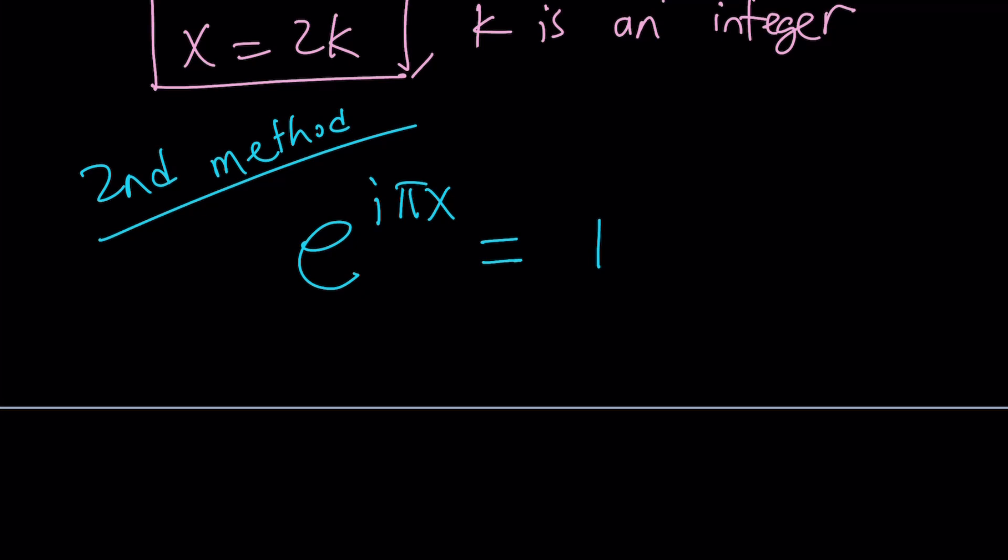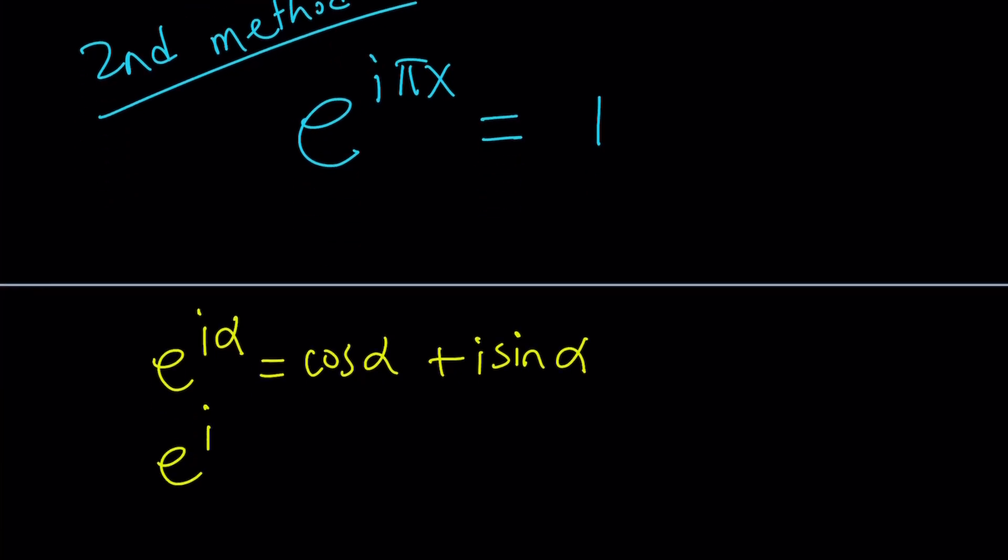Now the second method depends on the following. It kind of uses the same idea, but we don't use the cosine alpha plus i sine alpha form. It's pretty much, like, very similar. I know some people are going to be like, hey, it's the same thing, but slightly different.